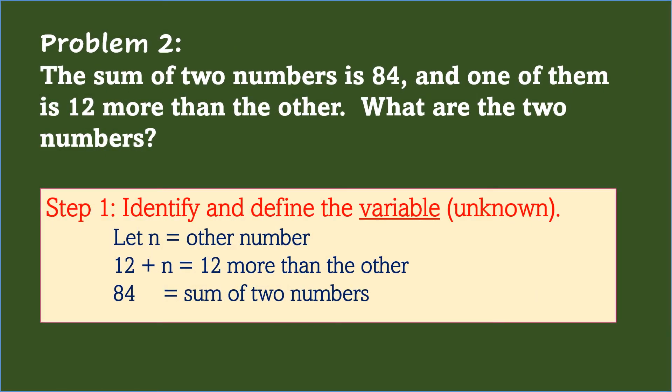Problem 2. The sum of two numbers is 84, and one of them is 12 more than the other. What are the two numbers?